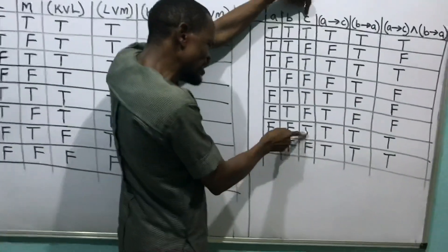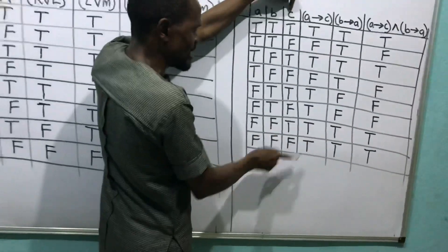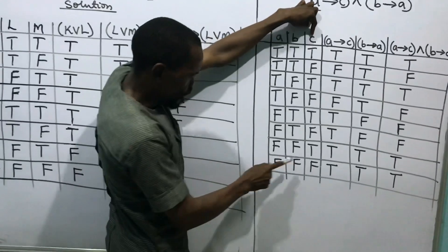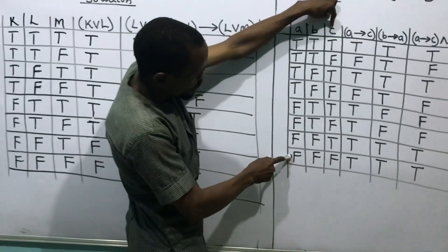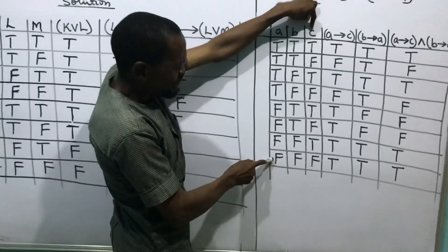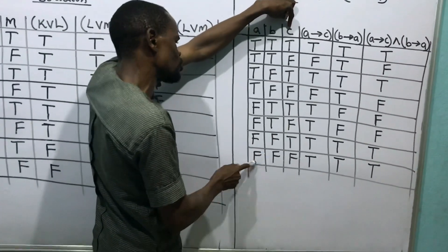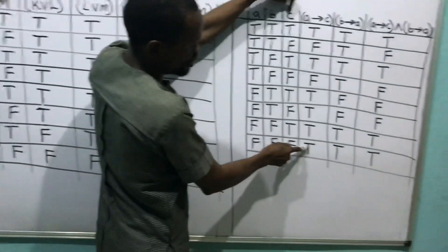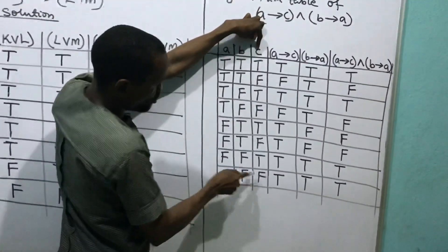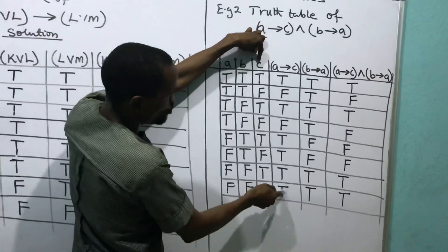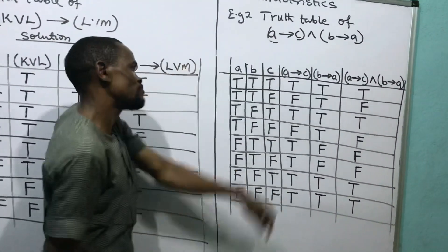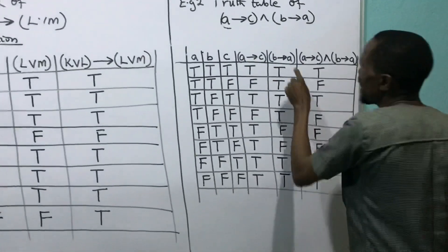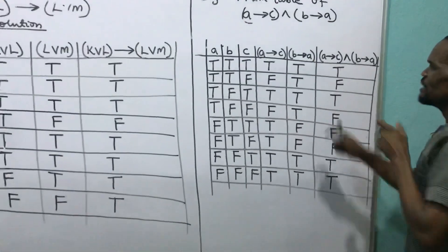Coming over here: C is true — the answer is true. C is false; he comes back to A — A is false. He changes false-false to the word true. Have you seen it? I'm changing it to true — false-false, he changes to the word true. Then I come over to this man — B implies A.